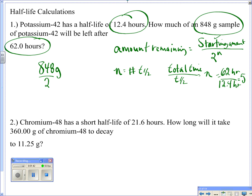So as long as they're in the same unit, we can divide, and we find that we have 5 half-lives that it's going to go through. So I can take 848 and divide it by 2, and I can do that 5 times, or I can just raise it to the 5th power on my calculator. And so if I do 2 to the 5th, I'm going to find that that's 32. And so 848 divided by 32 is going to give me 26.5 grams remaining. So that's that answer.